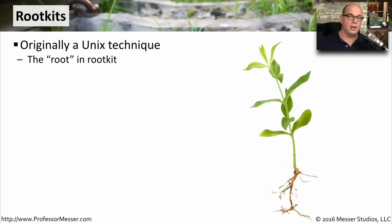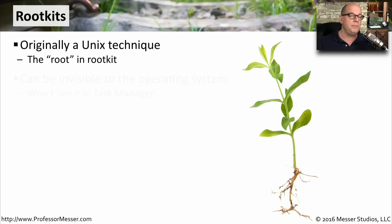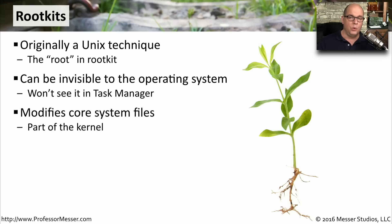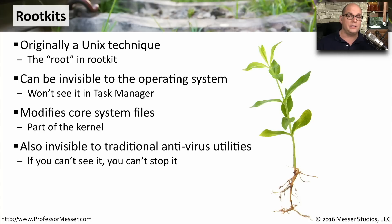Another very dangerous type of malicious software is a rootkit. The name rootkit comes from the Unix user root, who is the super user in the Linux or Unix operating system. This is a type of malicious software that's dangerous because it's completely invisible to the operating system. It hides itself, so you won't see this appear in Task Manager or any of your process lists, because the operating system has no idea this malicious software is there. Rootkits will use a number of different techniques to hide themselves. One common method is to modify the core system files of the operating system itself. Once you become part of the kernel, you're effectively invisible to the rest of the operating system, and antivirus and anti-malware applications won't see these rootkit applications.